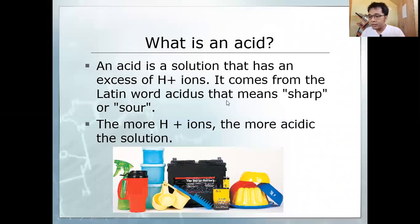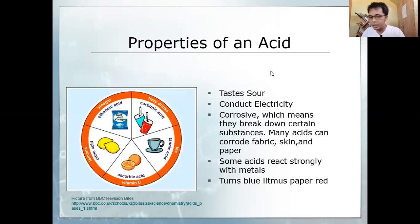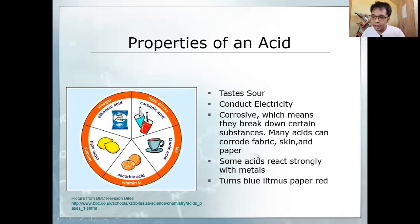The acid generates hydrogen ions or hydronium ions in solution. It comes from the Latin word 'acid' which means sharp. The more hydrogen ions or hydronium ions the solution contains, the more acidic it is. In the properties of an acid: it tastes sour, conducts electricity due to its complete dissociation when dissolved in water, it is corrosive, can break down certain substances like metals and reacts strongly with metals. It will generate hydrogen gas and turns blue litmus paper into red.